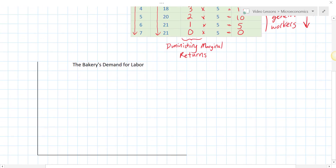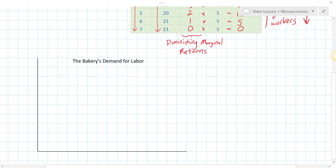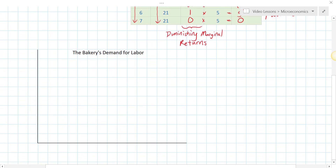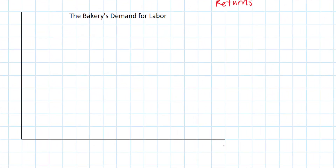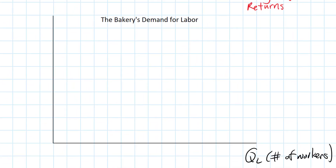Let's look at the demand for labor graph for the individual bakery. On the horizontal axis we have the quantity of labor — the number of workers. On the vertical axis we have the marginal revenue product, which is the amount of revenue each hired worker contributed to the firm's total revenues. This also represents the wage rate, because it tells us how much the firm would be willing to pay each worker.